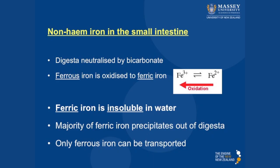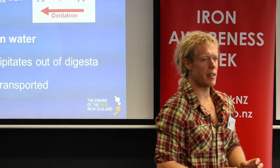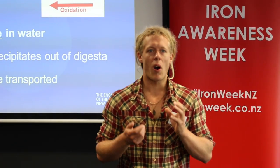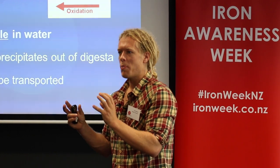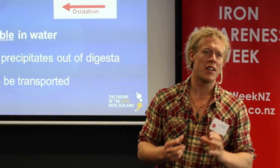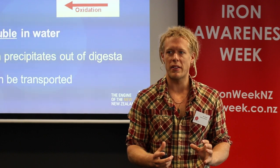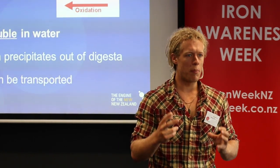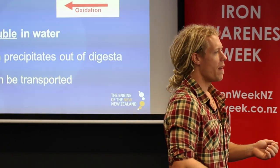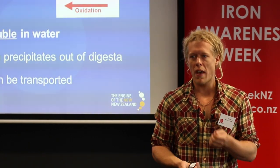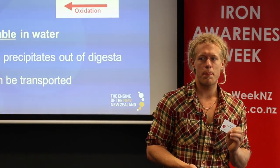The small intestine is not acidic. The majority of the small intestine is alkaline or neutral because the pancreas produces bicarbonate and the acidic digesta, as it moves from the stomach into the small intestine, is neutralised. The digesta in the small intestine is neutral and these are oxidising conditions. So this lovely, soluble, happy ferrous iron becomes oxidised to unhappy, unsociable ferric iron. The majority of this iron is insoluble and it precipitates — it forms a big clump or polymer and it's unavailable for absorption. Furthermore, ferric iron can't be transported in large amounts in the small intestine, which means that before it can be absorbed, it has to be reduced back to the ferrous form.